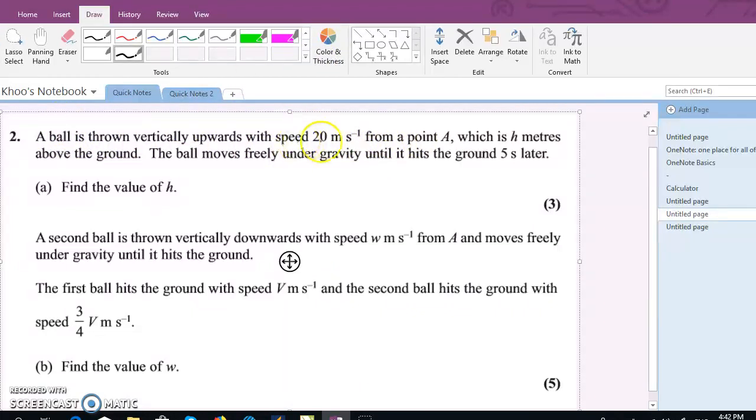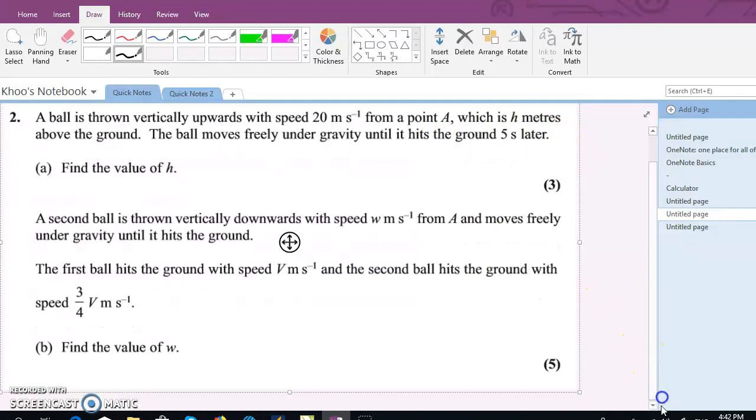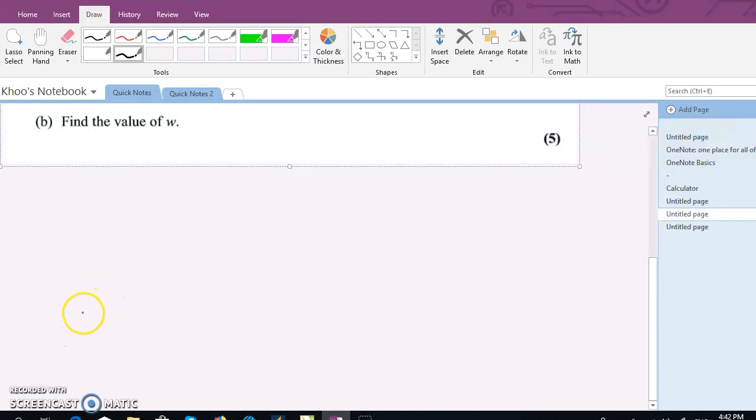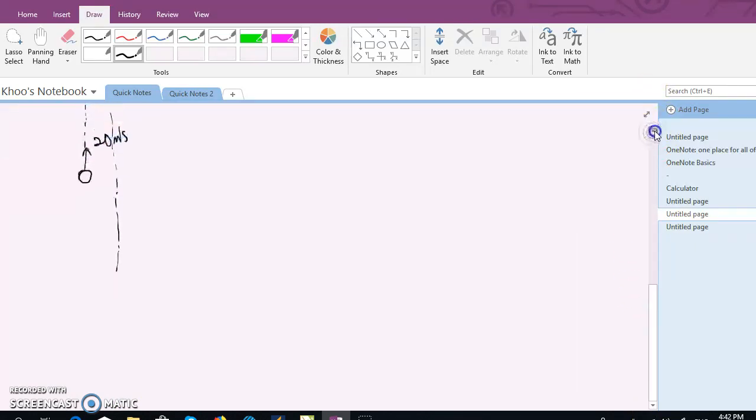First, you're given that the ball is thrown vertically with speed 20 from point A, h meters above the ground, and it moves for five seconds. Let's go down. What we have here is a particle projected with speed 20 meters per second. It travels up, reaches the highest point, then drops down and hits the ground somewhere here.